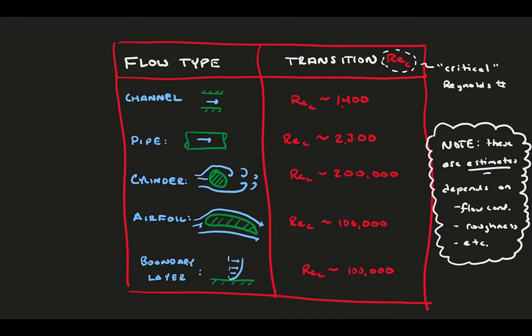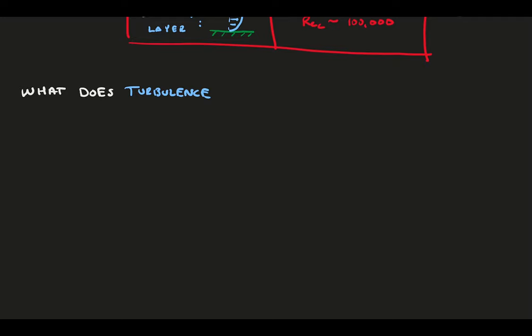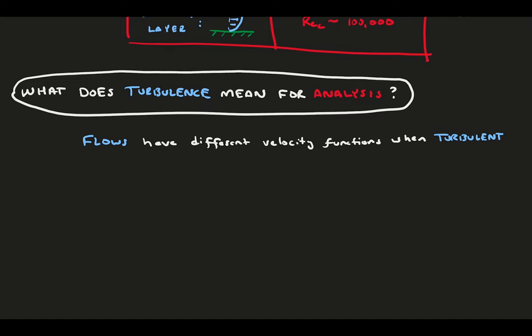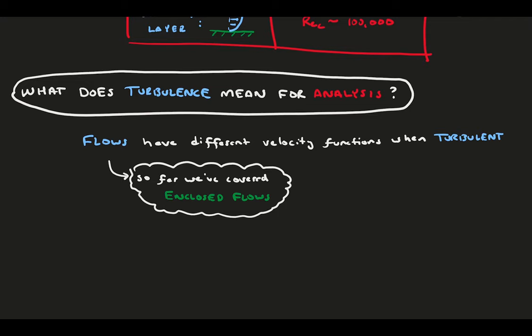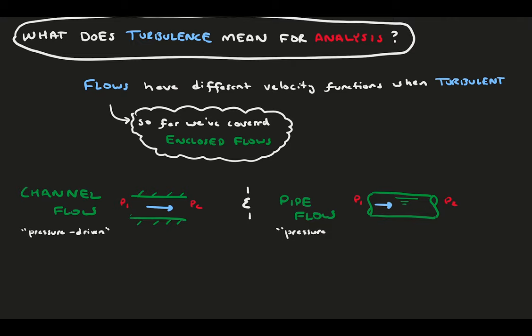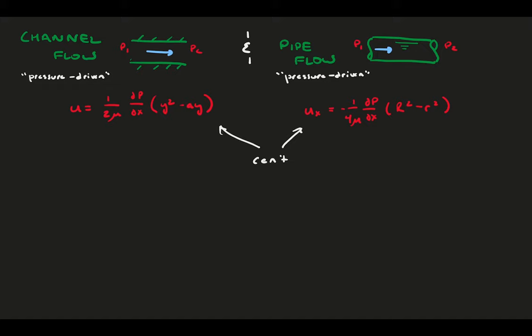If we can't predict turbulence with the equations, how can we do flow analysis — is there any way to say something about flow rate and wall shear? For this, we use empirical models of the velocity field: functions that, after a lot of observations, we trust to recreate the velocity field accurately. Let's compare laminar and turbulent flow. We're well acquainted with laminar channel and pipe flow driven by pressure difference, where we derived smooth parabolic velocity profile functions. When flow is turbulent, we cannot directly derive functions like these, but we can use some models.